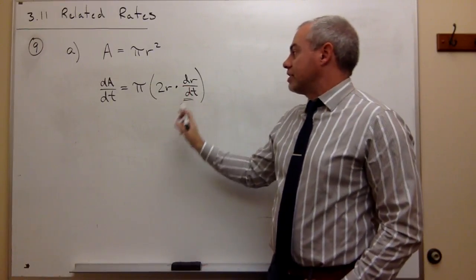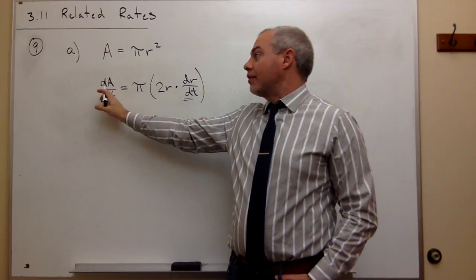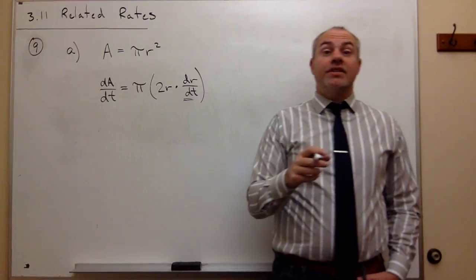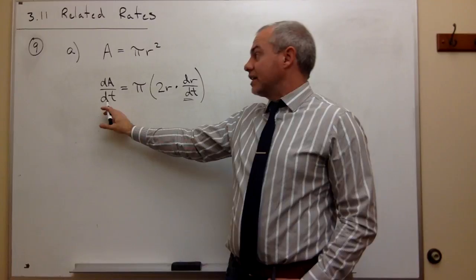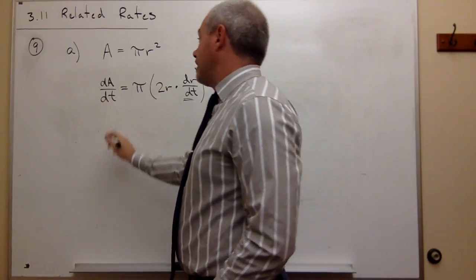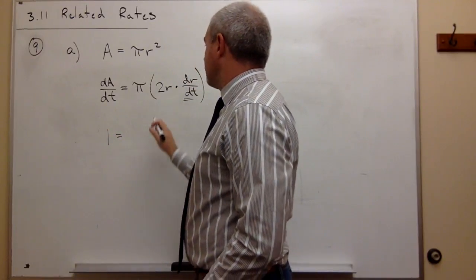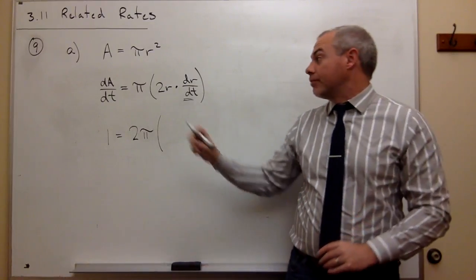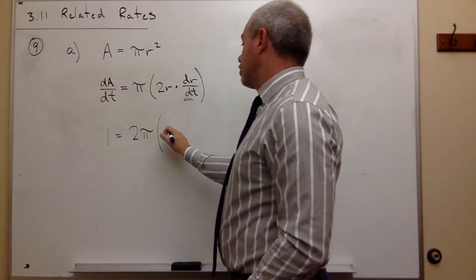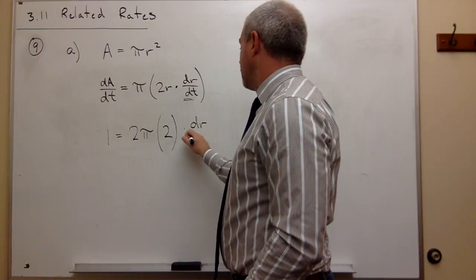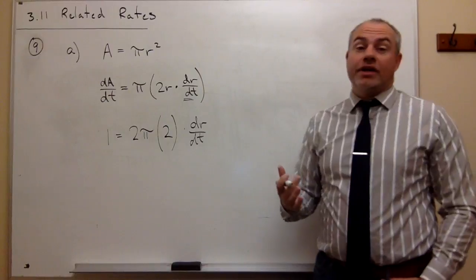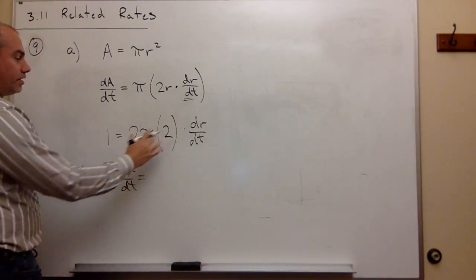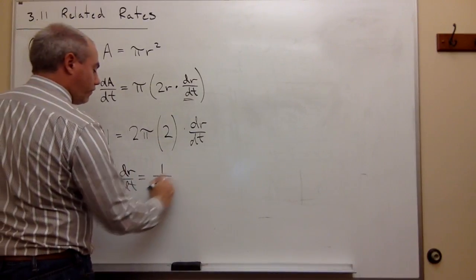To figure out dr/dt, I need to know dA/dt — how the area is changing with respect to time — and I need to know r at that specific time. Both are given in part A. dA/dt is 1, so I replace that with 1. That gives me 1 equals 2 pi times r. The radius r is given as 2, so plugging in 2 for r, I can solve for dr/dt. Dividing both sides by 4 pi, I get dr/dt equals 1 over 4 pi.